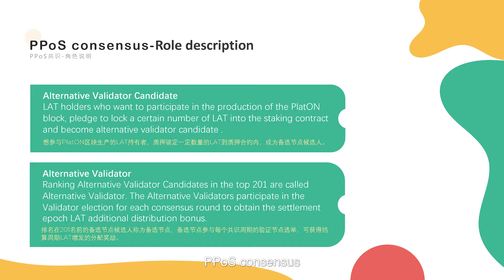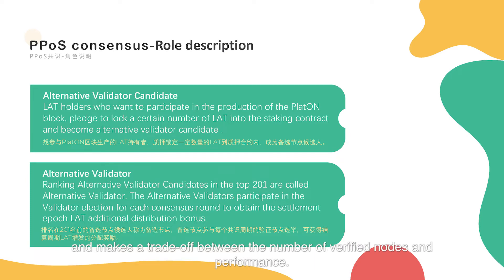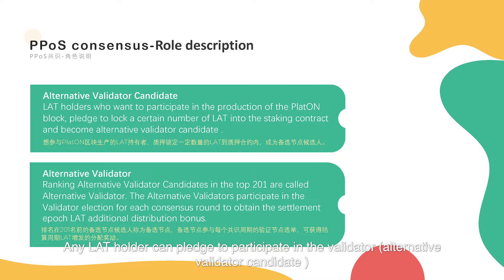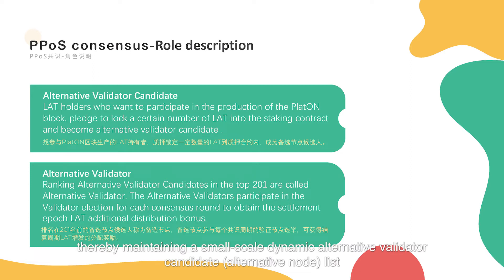Post-consensus: Platon adopts randomly selected nodes among the small-scale candidate nodes to participate in the BFT consensus, and makes a trade-off between the number of verified nodes and performance. Any lot holder can pledge to participate in the validator as an alternative validator candidate. Other lot holders continue to vote through delegation, thereby maintaining a small-scale dynamic alternative validator candidate node list.